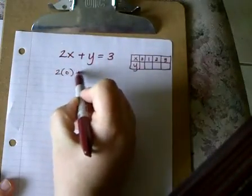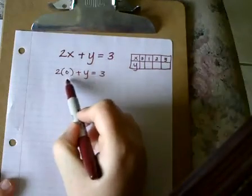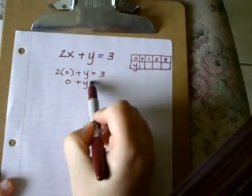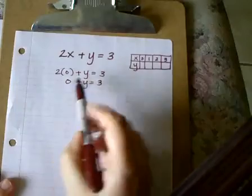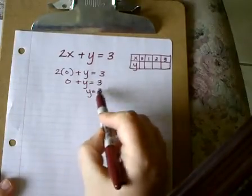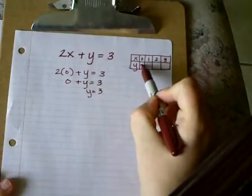2 times 0 plus y equals 3. 2 times 0 is 0, plus y equals 3. And because this is 0, y is then 3. So when x is 0, y is 3.